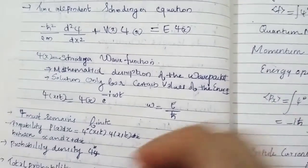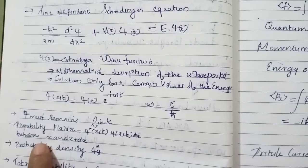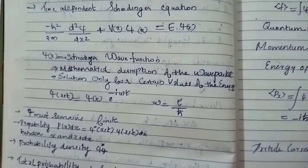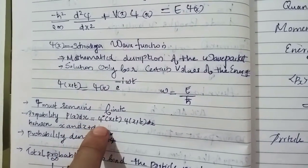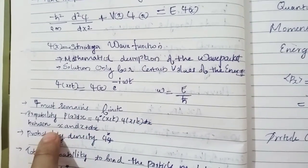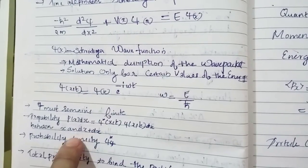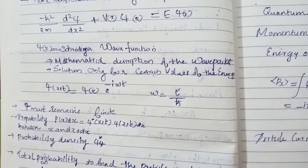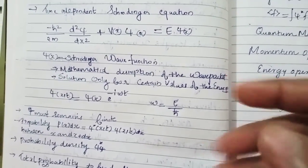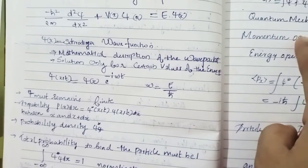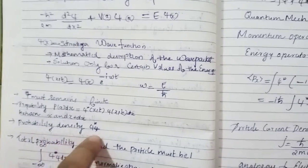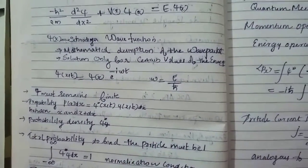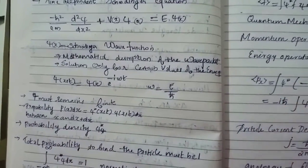For a time-independent Schrödinger equation, psi must remain finite. The probability P(x)dx equals psi-star(x,t) times psi(x,t) dx between x and x plus dx. We find the probability of a wave function between x and x plus dx as psi-star times psi times dx. The probability density is psi-star times psi, while the probability is psi-star times psi times dx. You should find the difference between probability density and probability.